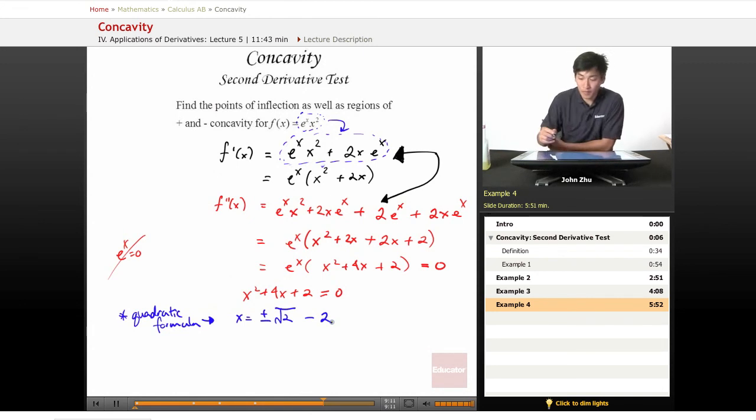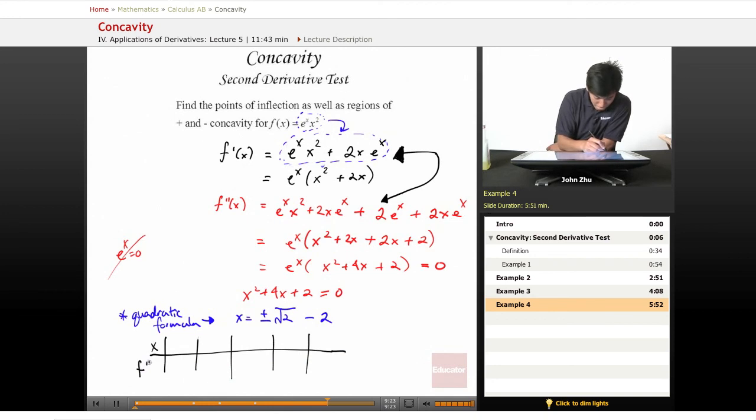So those are our points of inflection. Well let's examine what happens there. So we have divisions: one being negative root 2 minus 2, positive root 2 minus 2. And we have x between these values, then x greater than root 2 minus 2, and x less than negative root 2 minus 2.